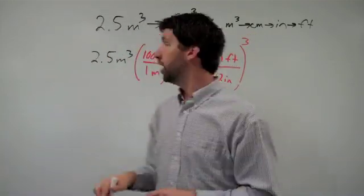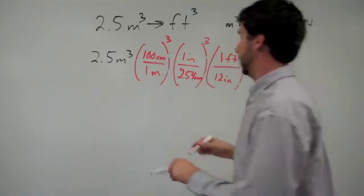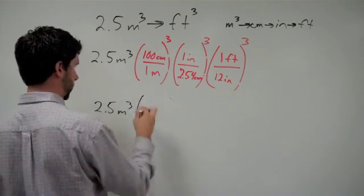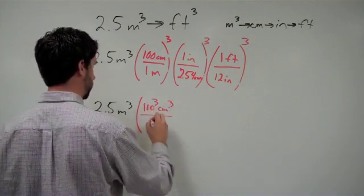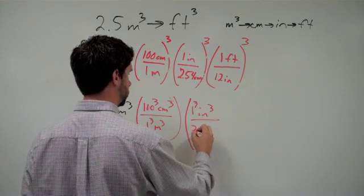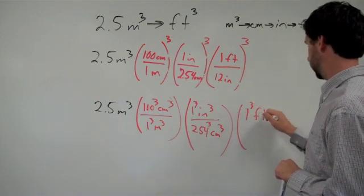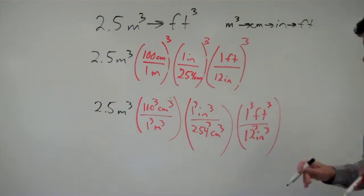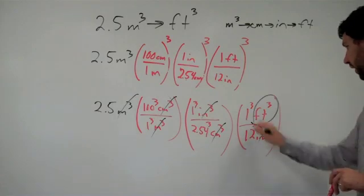Note that for all of these, we need to cube the conversion factor. And here's where I'm going to suggest you be very careful. It is so easy to forget to do this. So what I would normally do is make sure that it's very explicit. This is the same as doing 2.5 meters cubed times 100 cubed centimeters cubed over 1 cubed meter cubed, then 1 cubed inch cubed over 2.54 cubed centimeter cubed, and last of all, 1 cubed foot cubed over 12 cubed inches cubed. The reason I like this is because now we can check our units. Meters cubed cancel with meters cubed, centimeters cubed with centimeters cubed, inches cubed with inches cubed, and we're left with feet cubed.